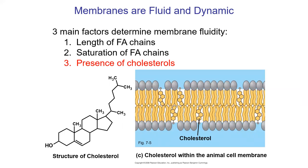Third factor is cholesterol. Cholesterol can embed into membranes — it has a small polar section interacting with the polar heads, while the hydrophobic section embeds in the membrane. Cholesterol is found in animal membranes, which is why eating animal products is a source of cholesterol; plants have different steroids. What cholesterol does is broaden the homeostatic range — filling in gaps when things are too fluid and preventing stacking when too solid, thereby optimizing membrane fluidity.